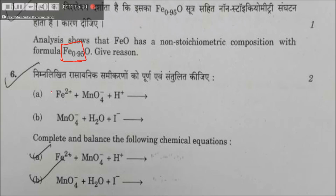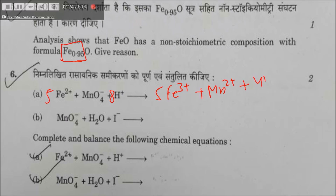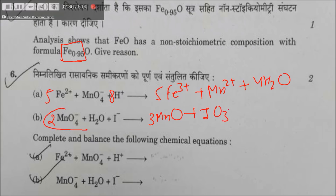To complete this redox reaction: 5Fe²⁺ giving 5Fe³⁺, MnO₄⁻ gives Mn²⁺, plus four water molecules. Also, 2MnO₄⁻ and 3MnO₃⁻ with 2OH⁻.